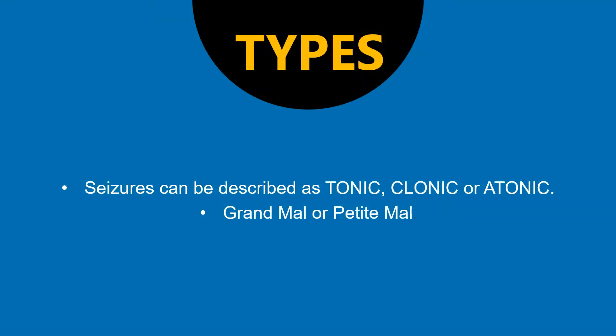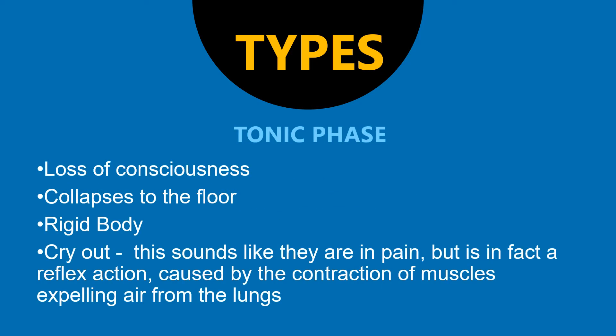Seizures can be described as tonic, clonic, or atonic. They can also be described as grand mal or petit mal seizures. The tonic phase of the seizure can manifest as a loss of consciousness. The patient can collapse to the floor, the body is usually very rigid, and they produce a cry-out sound — a reflex action caused by the contraction of muscles expelling air from the lungs.